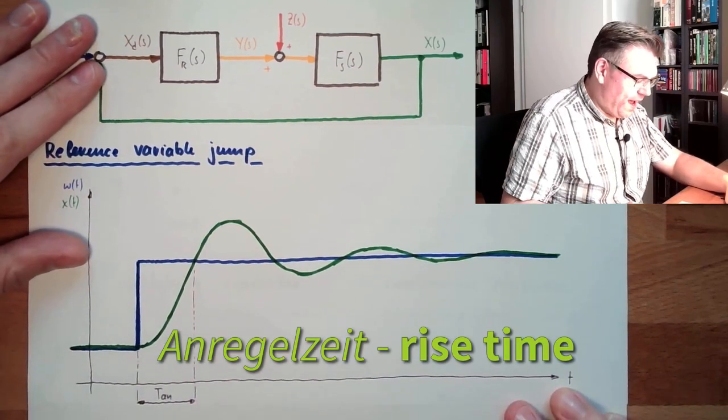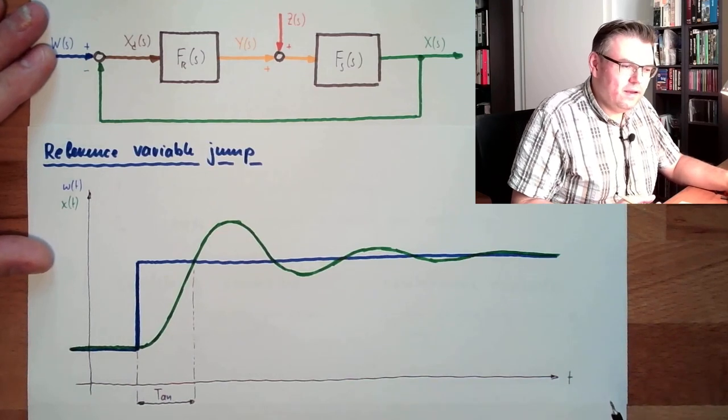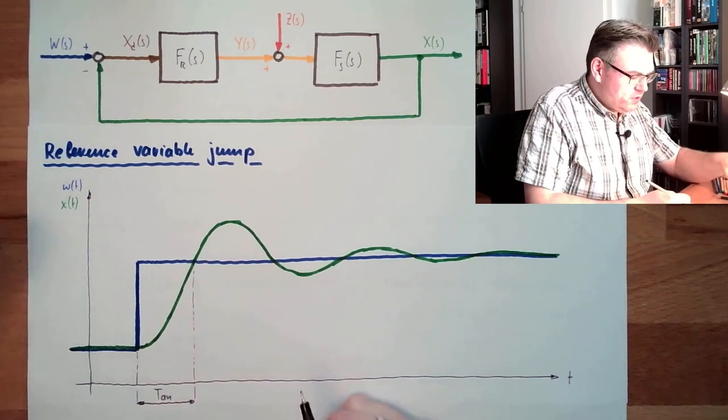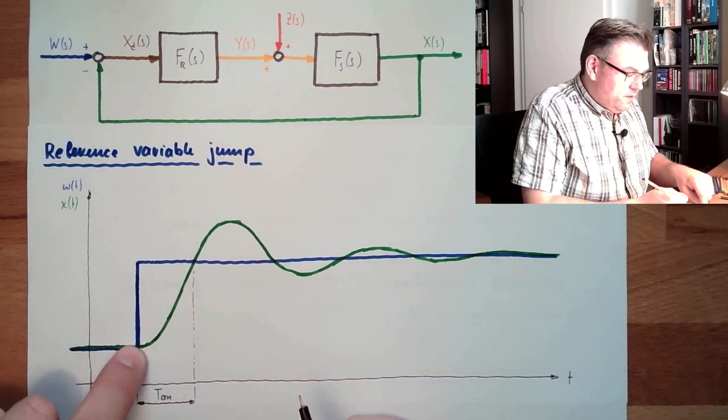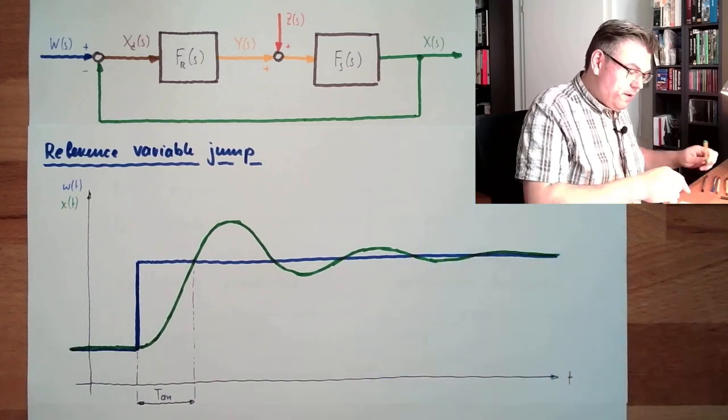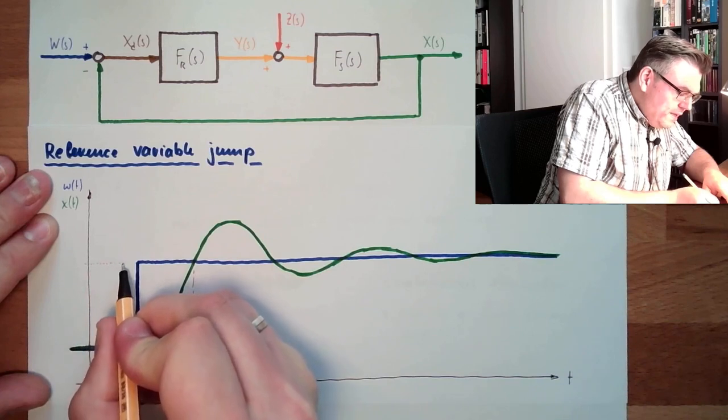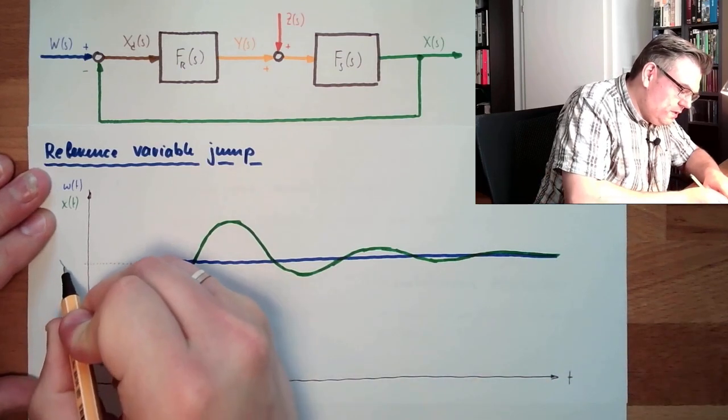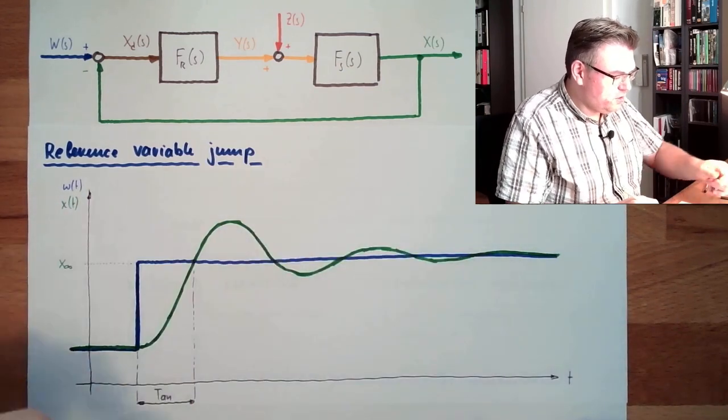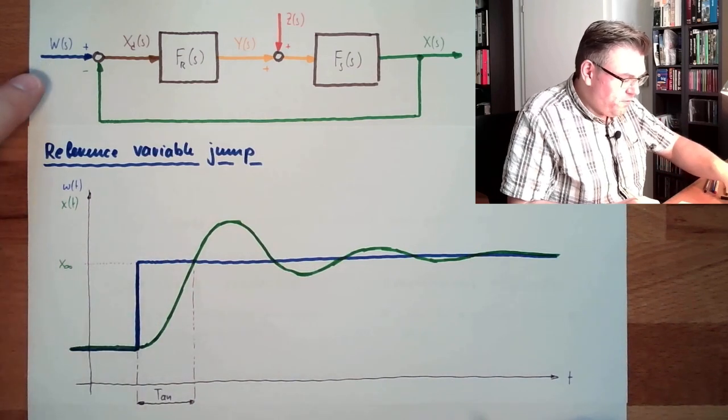In German it's the so-called Anregelzeit. In English it would be rise time. This is the rise time. This is the time from the jump until the controlled variable is reaching the first time its stable end position. This means in limited time we will reach this position. And this is the time from the start of the action, from the jump of the reference variable.